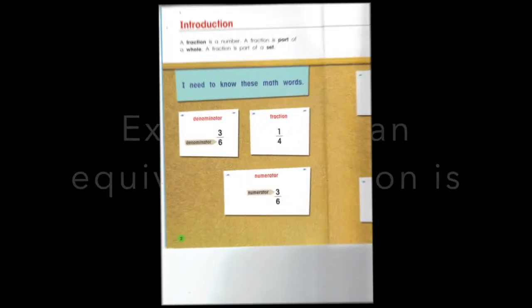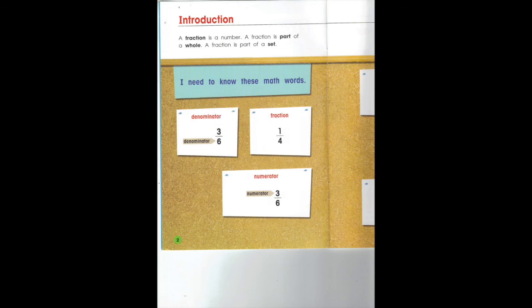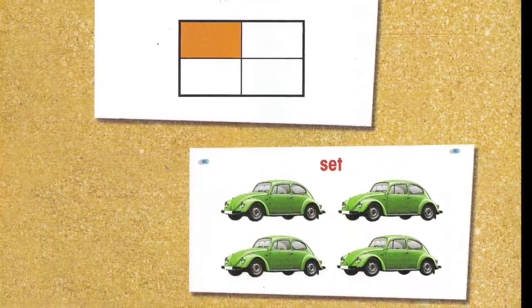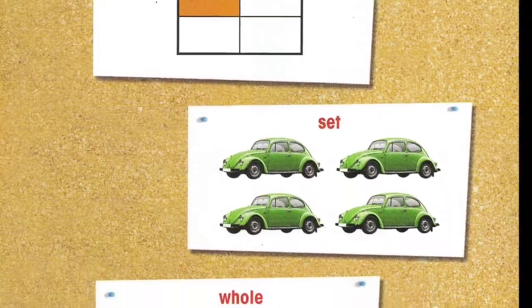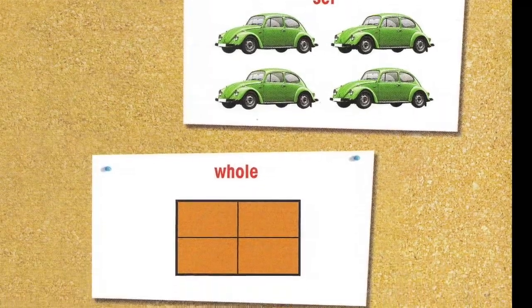Before we begin, let's look at some words. The first word we want to look at is fraction. A fraction is a part of a whole, a part of a set of things. It could be a set of things such as cars, it could be pizza, it could be anything. A fraction is a part of a whole.